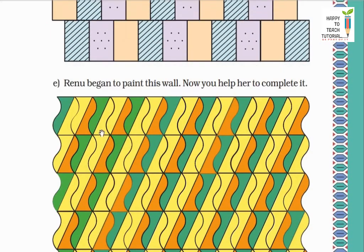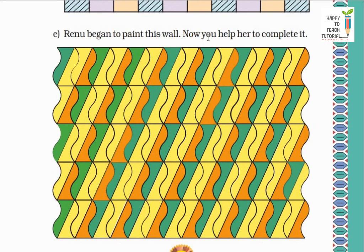Now next: Renu began to paint this wall. Now you help her to complete it. Renu had to paint this wall, and she started painting. So how did she do it? First this one, she colored green. Then in these two, yellow, yellow, then orange. Then again green, yellow, yellow, orange. So we will also do the same to complete this: green, yellow, yellow, orange. Green, yellow, yellow, orange. In this way, we will paint the entire wall.